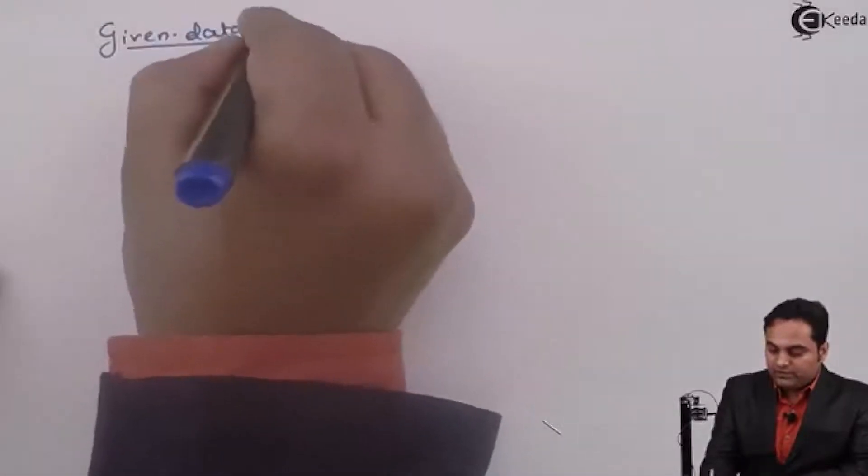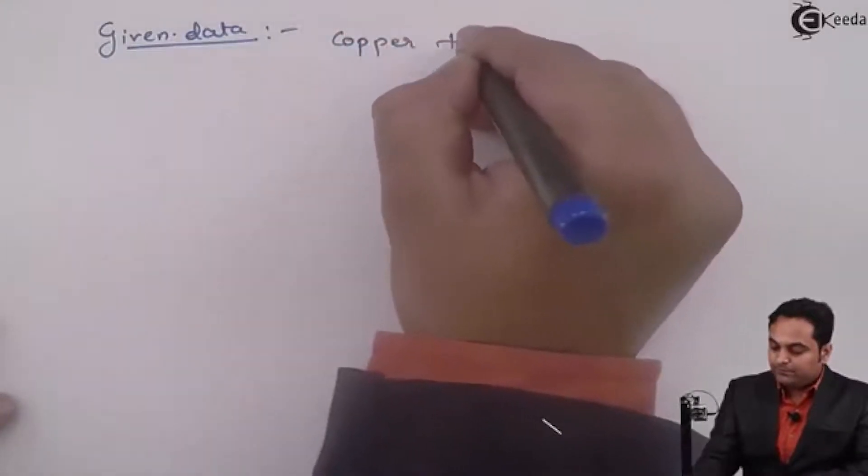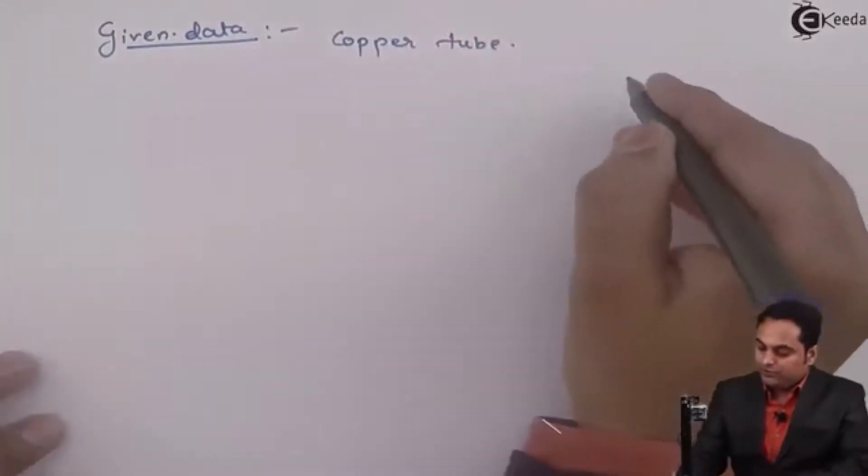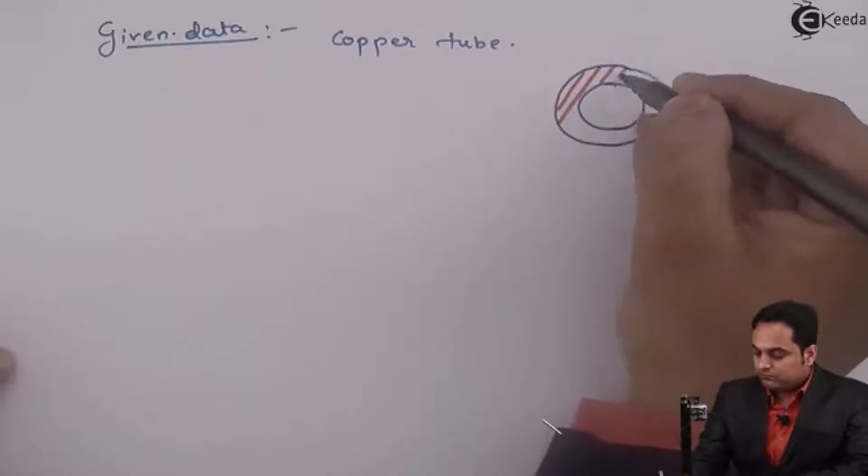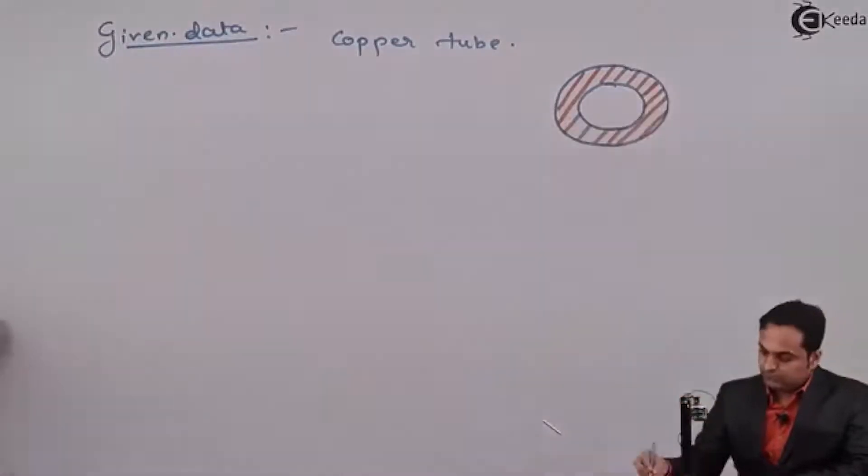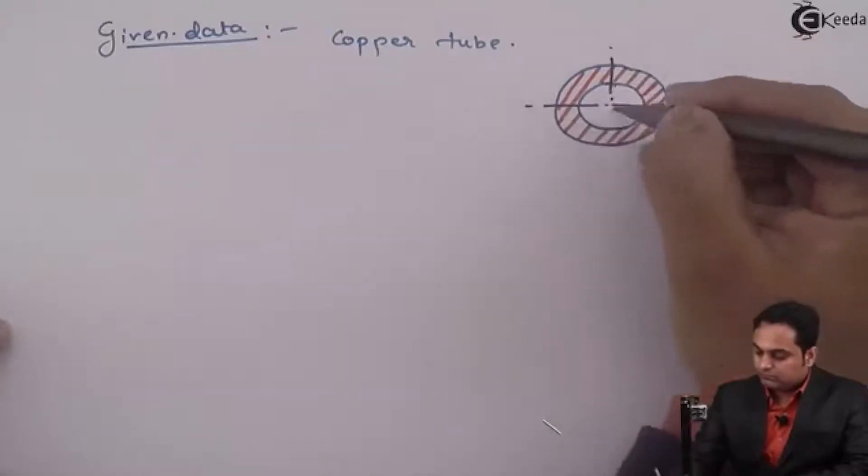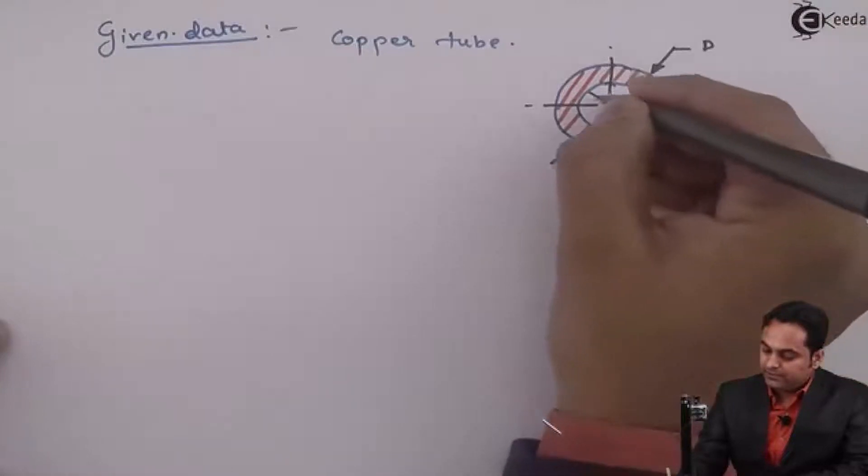So in the given data, the first thing is it is given that there is a copper tube. Since it is a tube we know that it will be a hollow section.